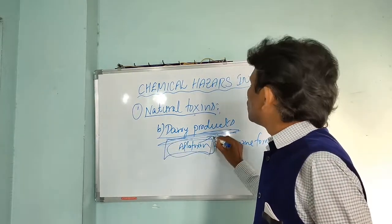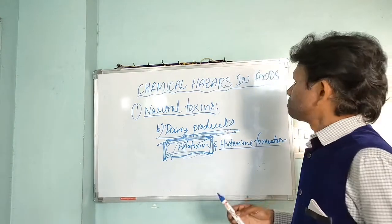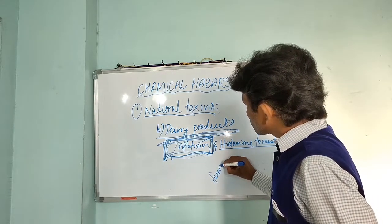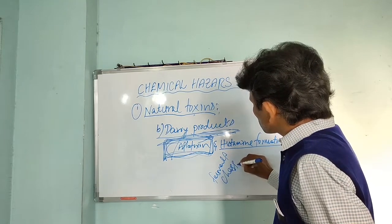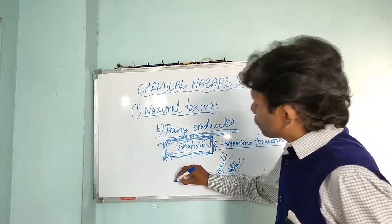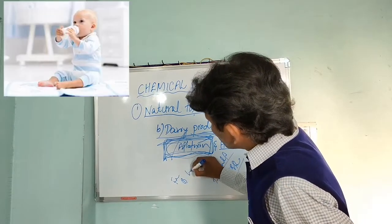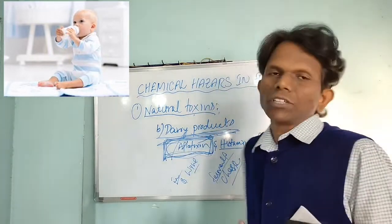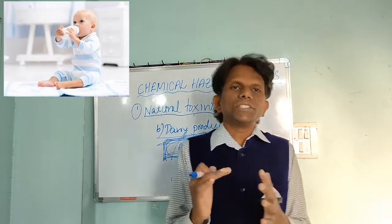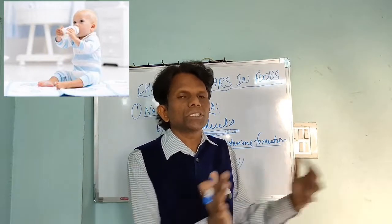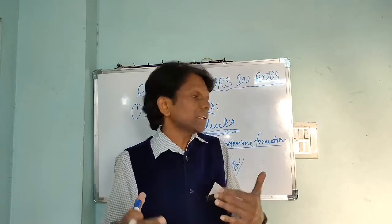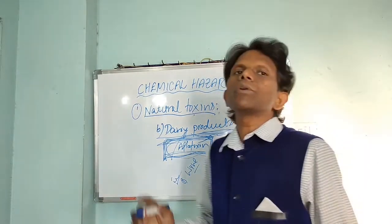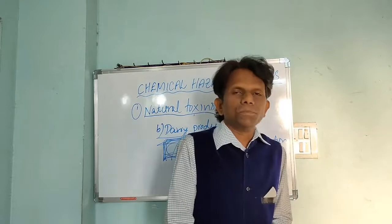We can take measures to prevent these kinds of aflatoxins. The next one is histamine formation, especially in fermented cheese, fermented barley, and fermented wine — histamine formation will occur in these products. It depends upon the aging of the cheese; sometimes cheese is cultured for 2 to 3 weeks or one month, and sometimes for 6 months. Aging cheese has more histamine content in dairy foods.